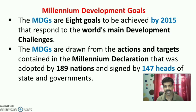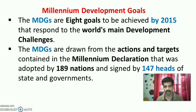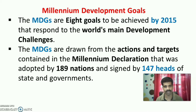The MDGs are 8 goals to be achieved by 2015 that respond to the world's main development challenges. The MDGs are drawn from the actions and targets contained in the Millennium Declaration, adopted by 189 nations and signed by 147 heads of state and governments.